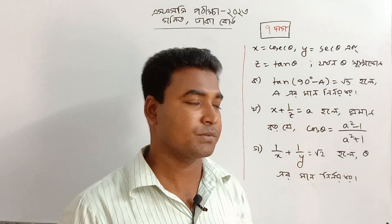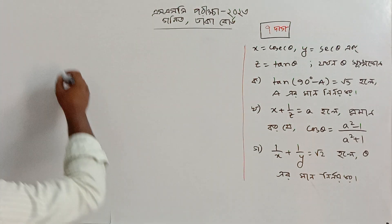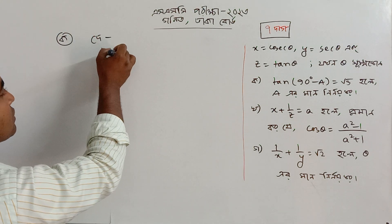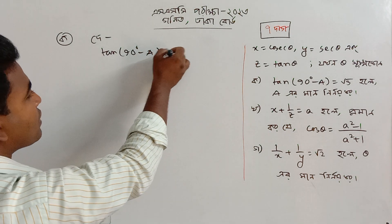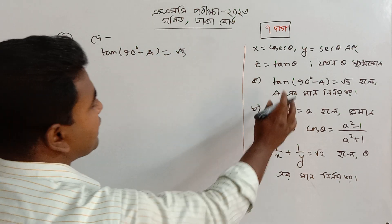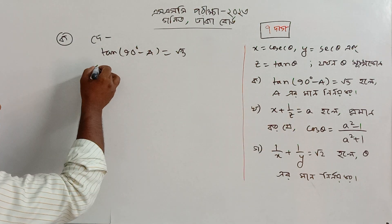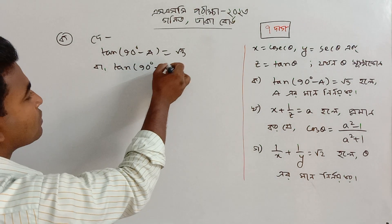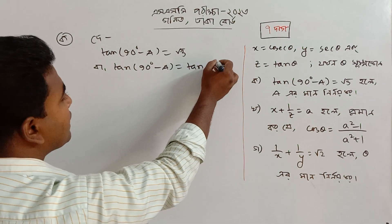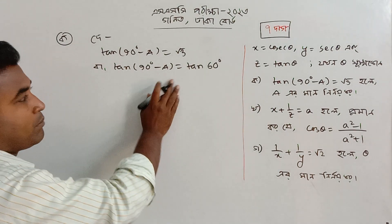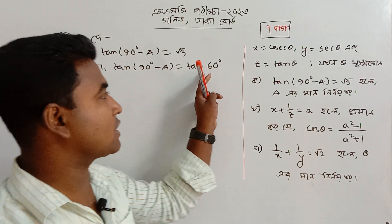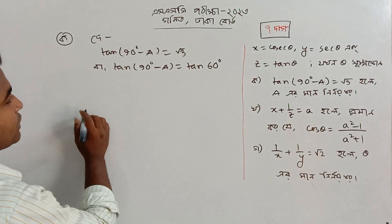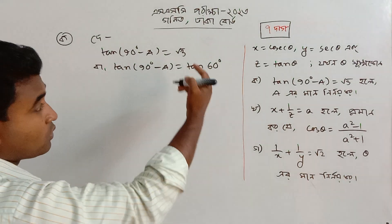So prepare it again. Which number is: 10 to 90 degrees minus a is equal to root 3? This is 10 degrees, which means 10 degrees. 10 to 60 degrees is equal to 10. 10 is equal to 10.